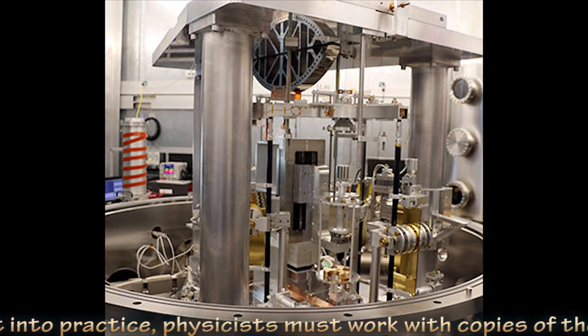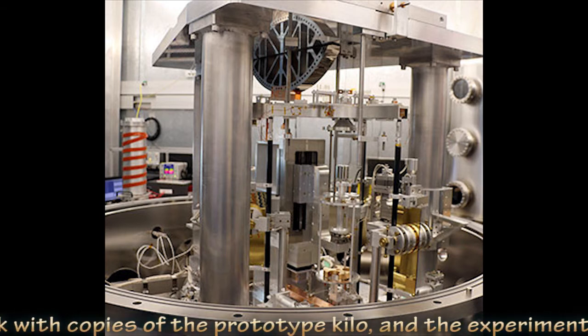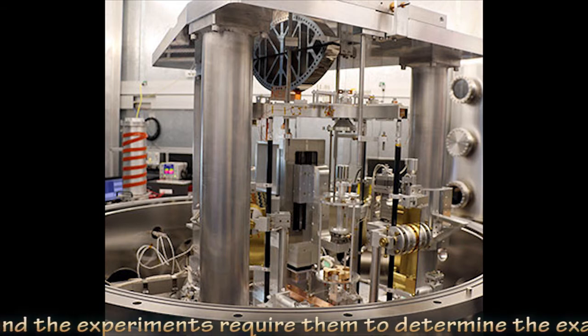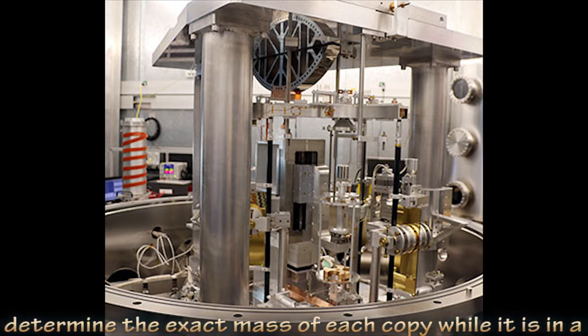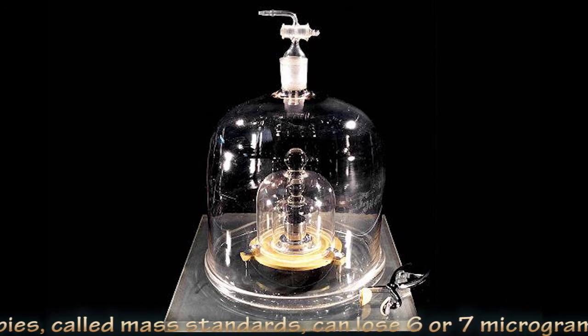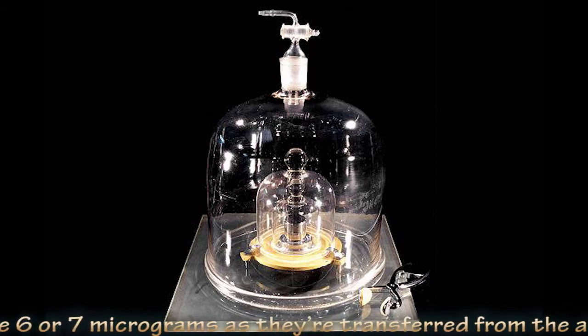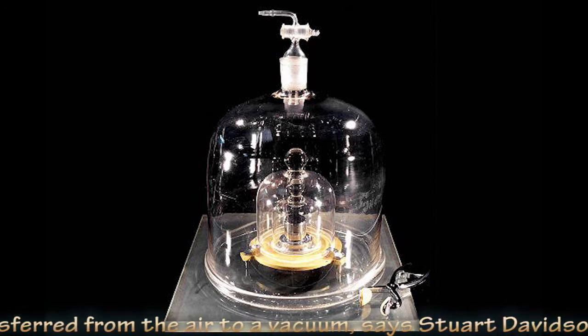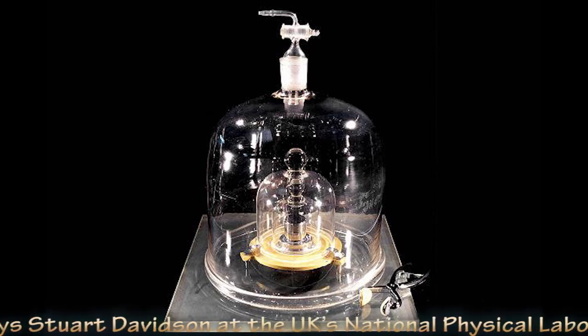But before either of these can be put into practice, physicists must work with copies of the prototype kilo, and the experiments require them to determine the exact mass of each copy while it is in a vacuum. These copies, called mass standards, can lose six or seven micrograms as they're transferred from the air to a vacuum.